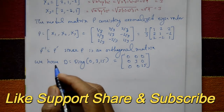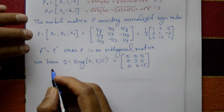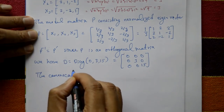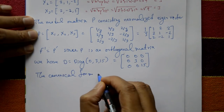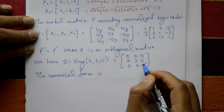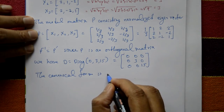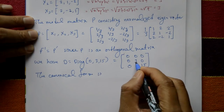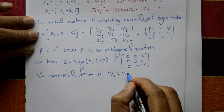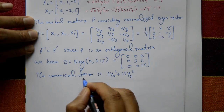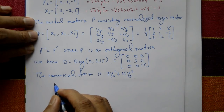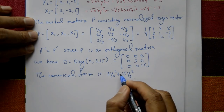Now the question also asks to find the canonical form. The canonical form is λ1·y1² + λ2·y2² + λ3·y3² = 0·y1² + 3·y2² + 15·y3². This simplifies to 3y2² + 15y3². This is the canonical form.